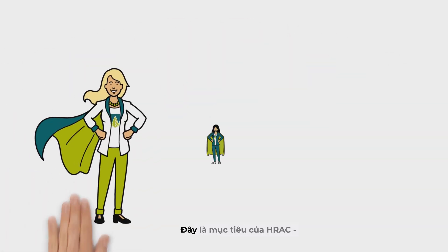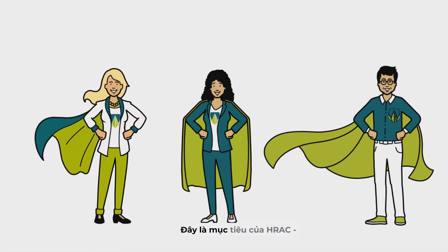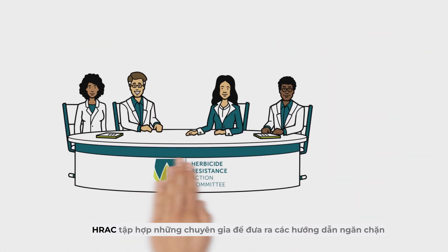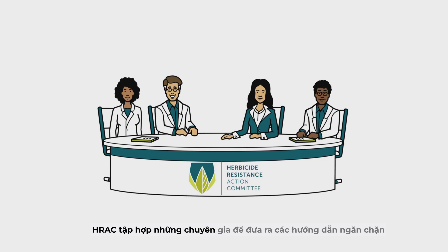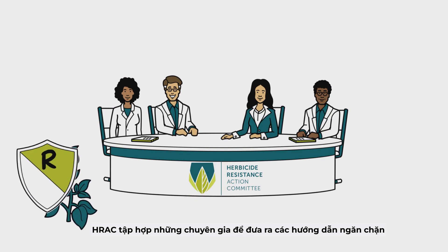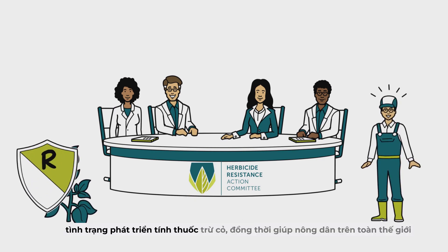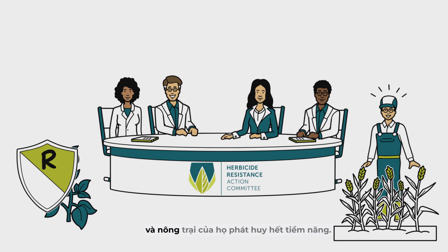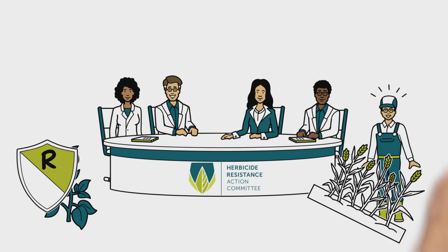That's where A-TRAG, the Global Herbicide Resistance Action Committee, comes in. Global A-TRAG unites experts to prevent herbicide resistance and help farmers and their crops around the world reach their full potential.